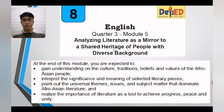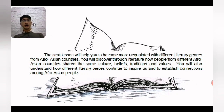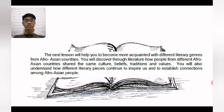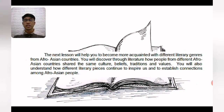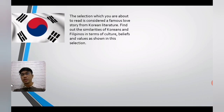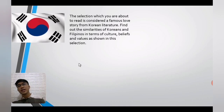Our second module is: Analyzing Literature as a Mirror to a Shared Heritage of People with Diverse Backgrounds — Quarter 3, Module 5. This lesson will help you become more acquainted with different literary genres from Afro-Asian countries. You will discover through literature how people from different Afro-Asian countries share the same culture, beliefs, traditions, and values, and understand how different literary pieces inspire us and establish connections among Afro-Asian people.